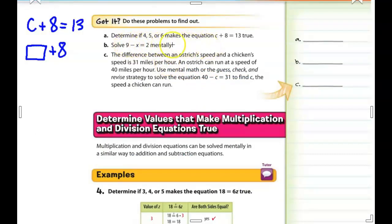So now we're going to try out what we just saw examples of. For letter A, it says, determine if 4, 5, or 6 makes the equation C plus 8 equals 13 true. So if C is unknown, we don't know. Let's have a blank area here. Something plus 8 is equal to 13. So if we try 4 first, I want you to go ahead and tell me what that answer would be.